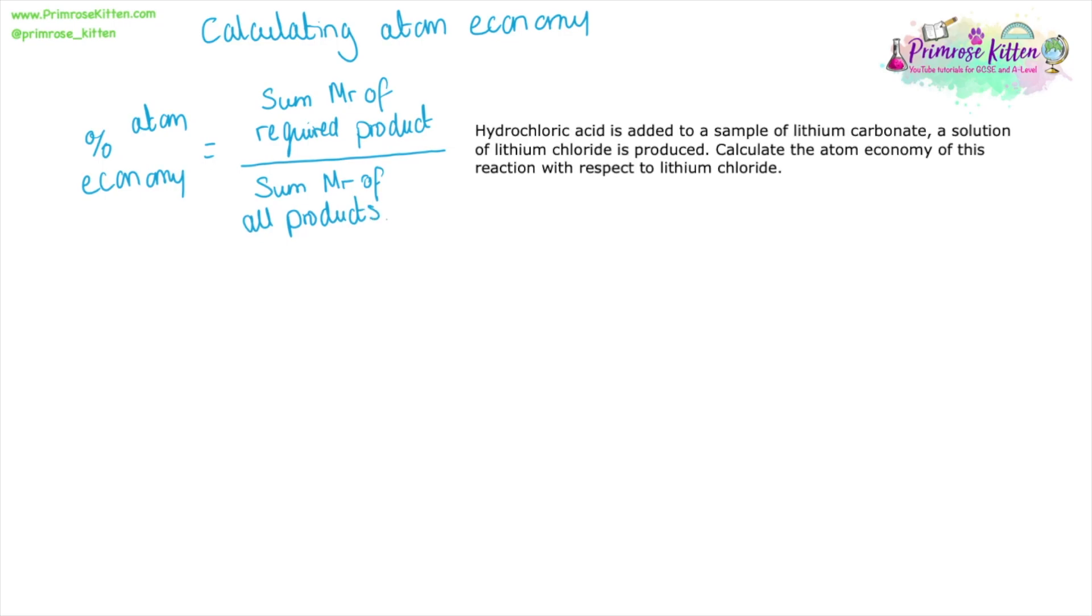Here is an example question. Hydrochloric acid is added to a sample of lithium carbonate. A solution of lithium chloride is produced. Calculate the atom economy of this with respect to lithium chloride. So we have hydrochloric acid being added to lithium carbonate. At A-level, I would expect students to be able to read a question and from that come up with the balanced equation.